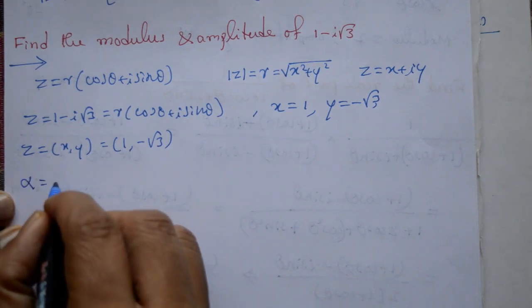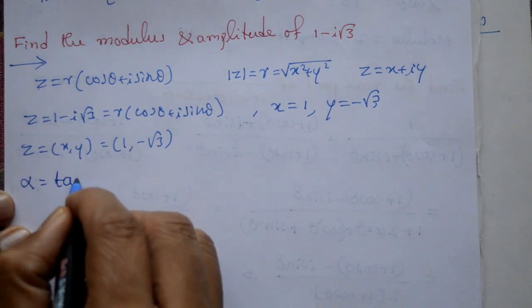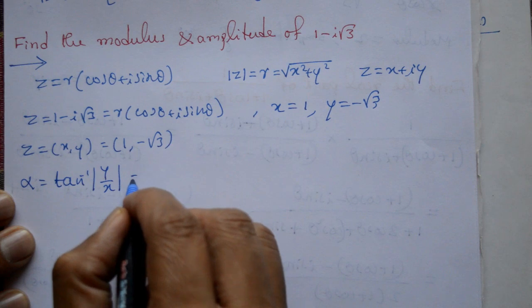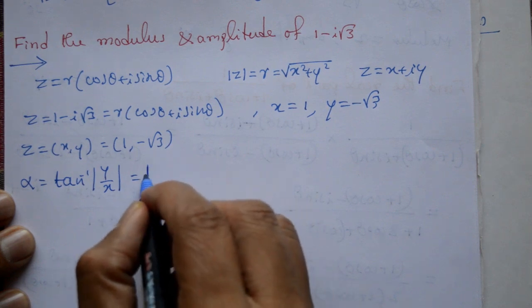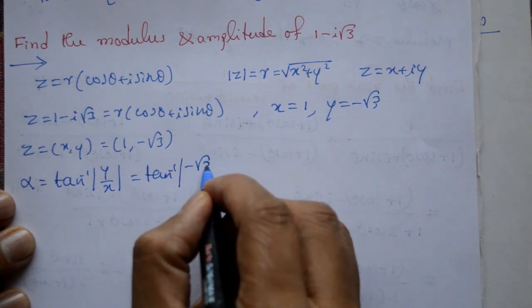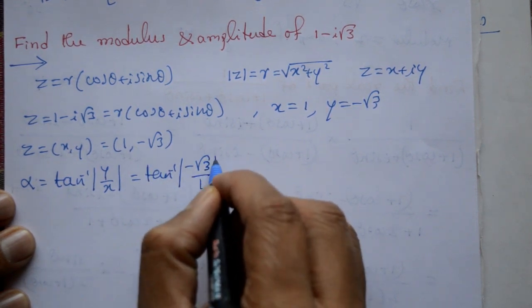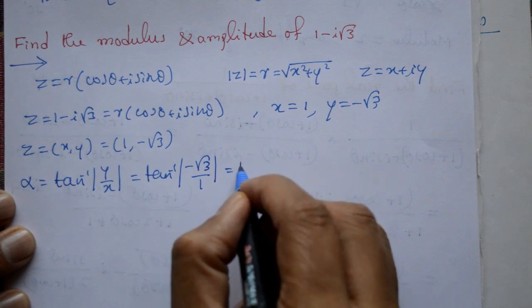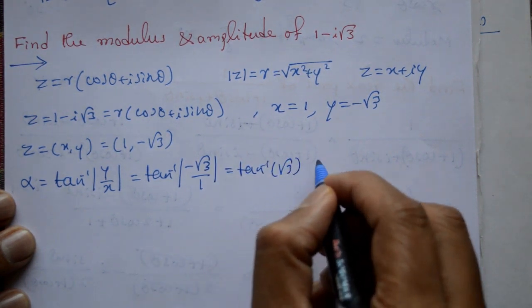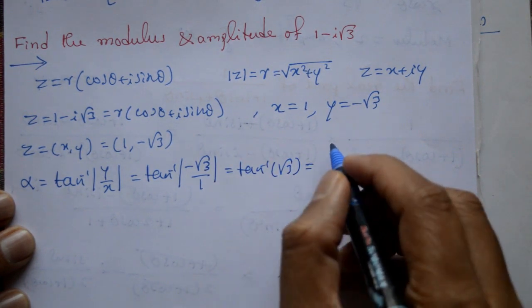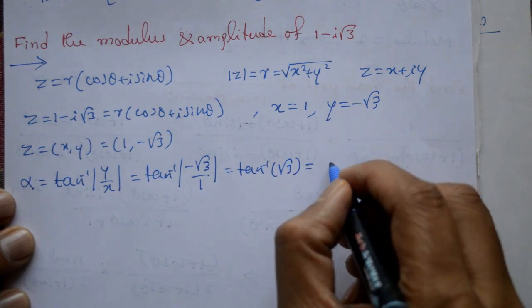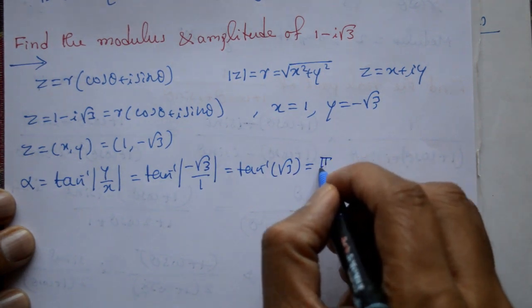Alpha find karke. Alpha is equal to tan inverse of mod y by x. That means tan inverse of minus root 3 divided by 1, ye ho gaya tan inverse root 3. Tan inverse root 3 that is 60 degree, that is pi by 3.